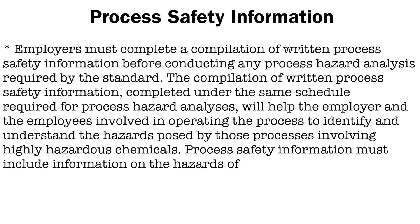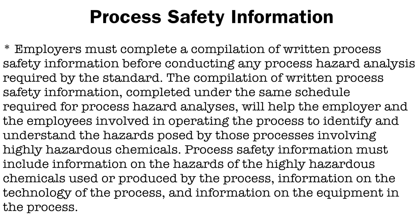Employers must complete a compilation of written process safety information before conducting any process hazard analysis required by the standard. The compilation of written process safety information will help the employer and employees involved in operating the process to identify and understand the hazards of the process. For processes involving highly hazardous chemicals, process safety information must include information on the hazards of the chemicals used or produced, information on the technology of the process, and information on the equipment in the process.